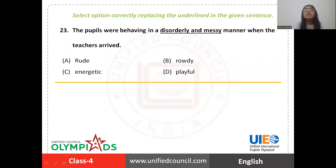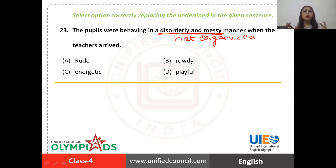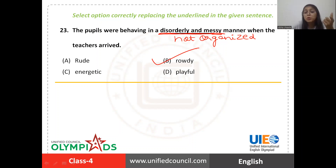Question number 23. We have to select the option which correctly replaces the underlined phrase 'disorderly and messy' in the given sentence. Disorderly means lacking order — something not organized. Messy means not organized well. The pupils are behaving in a disorderly and messy manner when the teachers arrive. The word that can replace this phrase among the given options is 'rowdy', meaning making a lot of noise. Rowdy fits perfectly here.